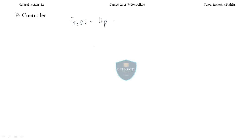Now, let me show you one example of how the P controller is going to control the system. Let us take G(s), and you know very well how the circuitry will be. I will not redraw the circuit. You know the G(s) will be there, before that the controller in the closed loop control system. So G(s) I am taking as 1 divided by s plus 10.